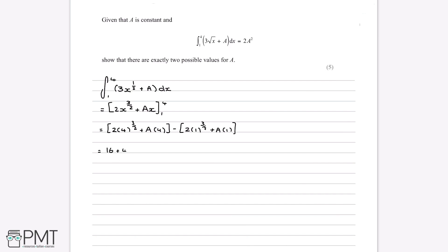And this is plus 4a minus 2 minus a. Remember that because this minus is on the outside of these square brackets, the a also becomes negative. This can trip people up sometimes. So now we're left with, if we simplify this a bit further, 14 plus 3a.